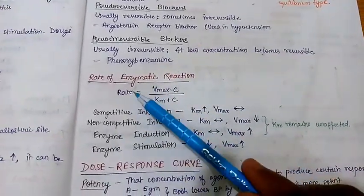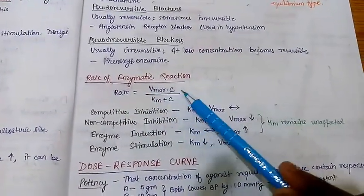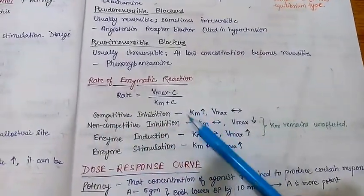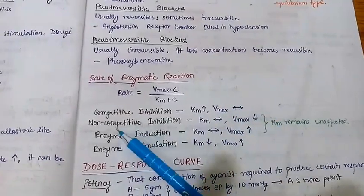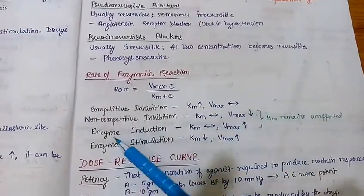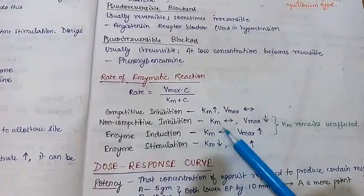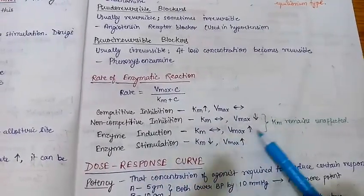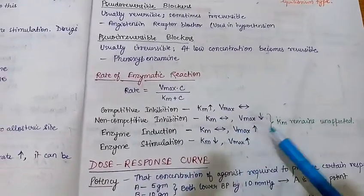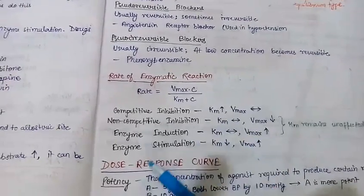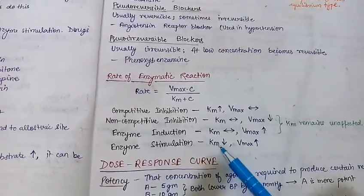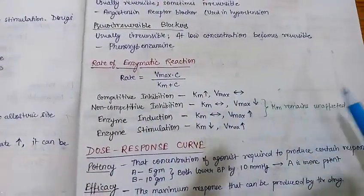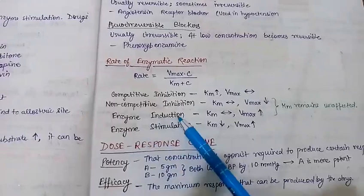Now, for the rate of enzymatic reaction, this is the Michaelis-Menten equation: V = (Vmax × [S]) / (Km + [S]). In competitive inhibition, the Km value increases while Vmax remains constant. In non-competitive inhibition, it is the reverse — Km remains constant but Vmax decreases. In enzyme induction, Km remains constant and Vmax increases. In enzymatic stimulation, Vmax also increases but Km decreases. So in two cases Km remains unaffected: non-competitive inhibition and enzyme induction.